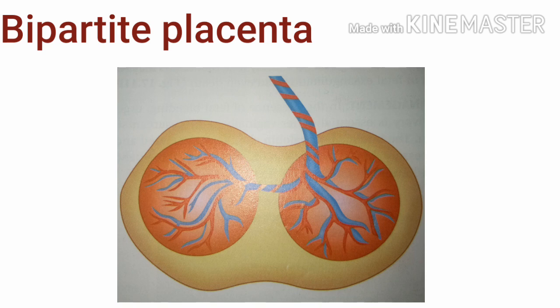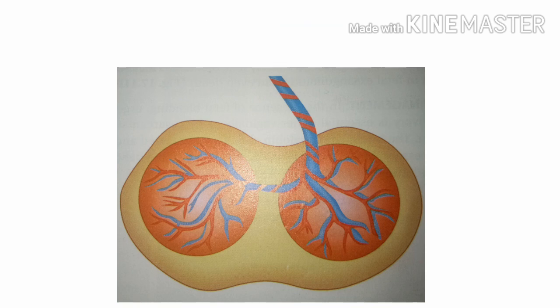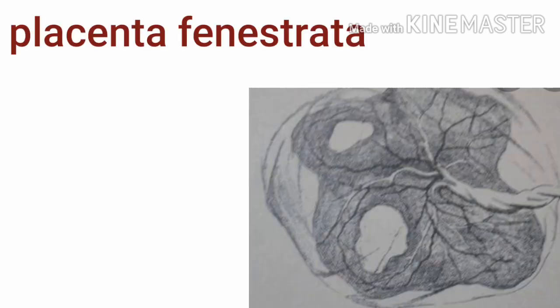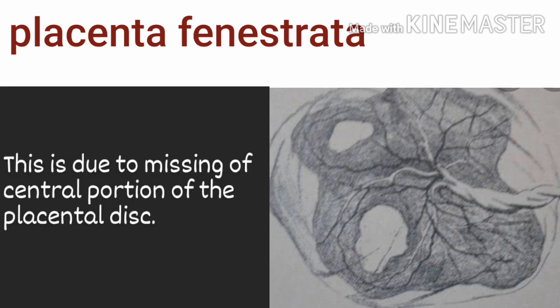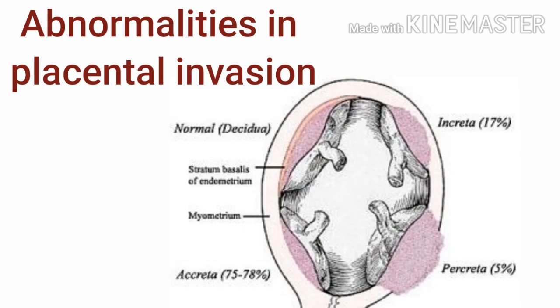Next is bipartite placenta, or placenta bilobate, where the placenta is divided into two portions. As seen in this picture, it has nearly two equally sized discs. The peculiar feature is that the placenta may develop as separate and nearly equally sized discs. Another abnormality is placenta fenestrata — a rare condition in which the central portion of the discoid placenta is missing.